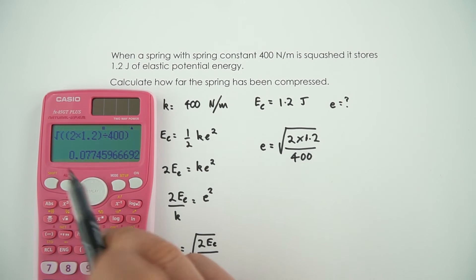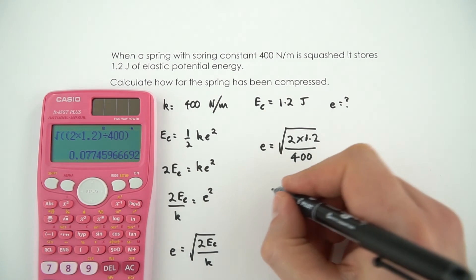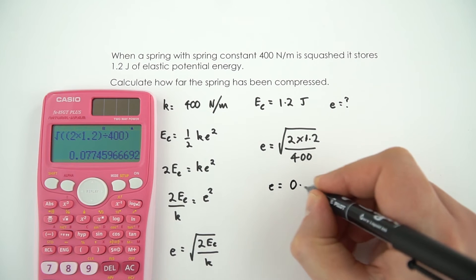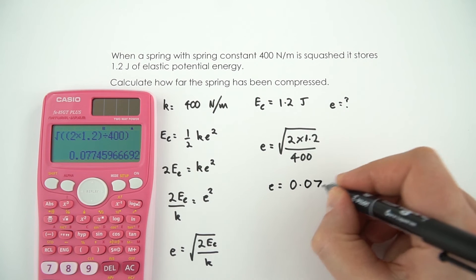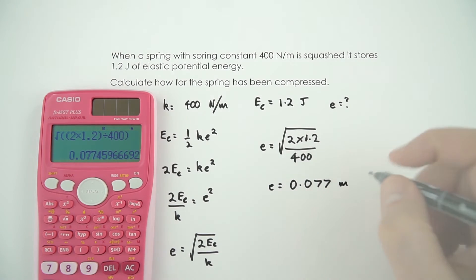And this then gives the value of 0.0774, and that means the extension is going to be equal to 0.077 meters.